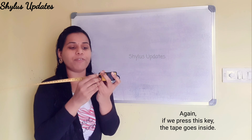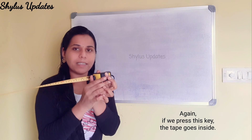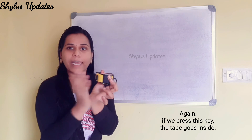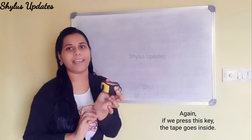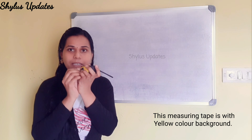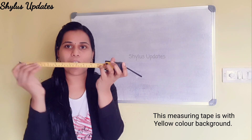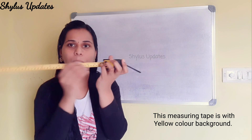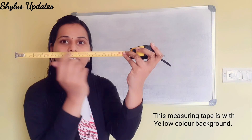And again, if we press this key, the tape will go inside. This measuring tape has a yellow background — you can see it is fully yellow background.